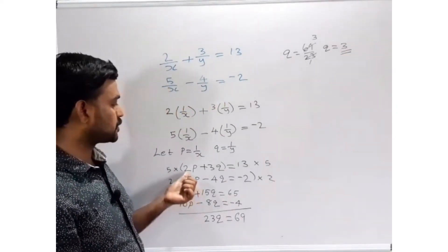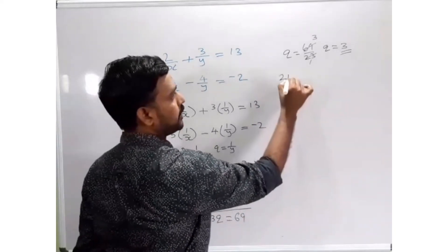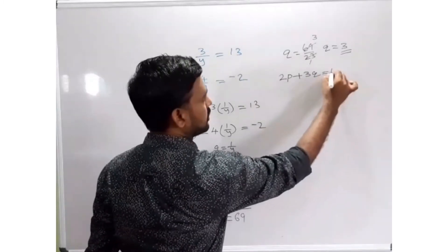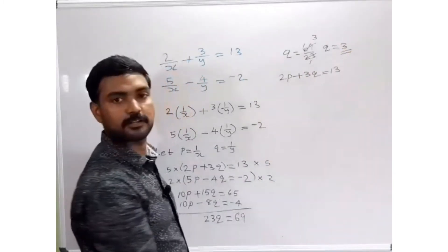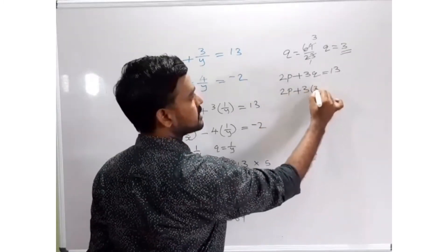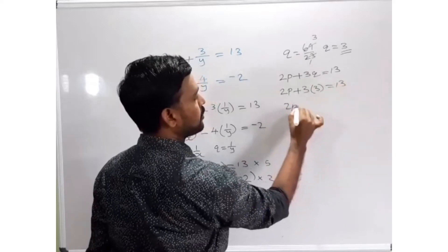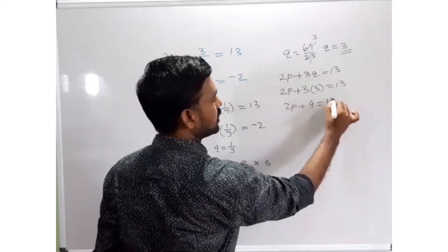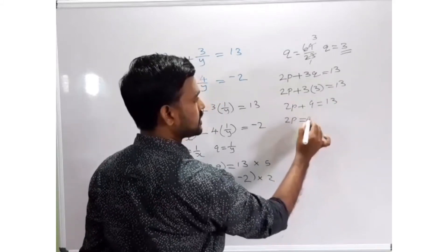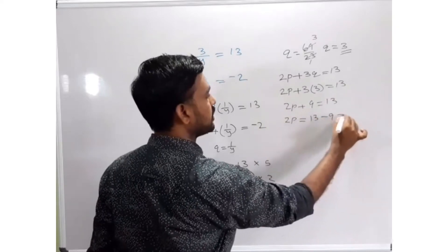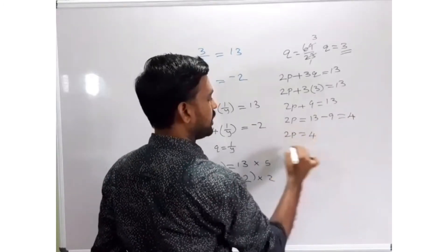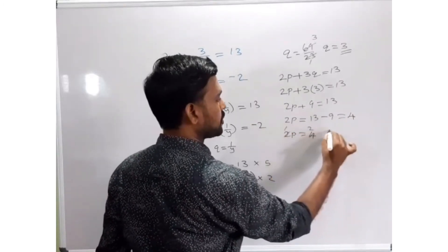Now we can select any simple equation. I select 2p + 3q = 13. Substituting q = 3: 2p + 3 × 3 = 13, so 2p + 9 = 13. Transposing: 2p = 13 - 9 = 4. Therefore p = 4/2 = 2.